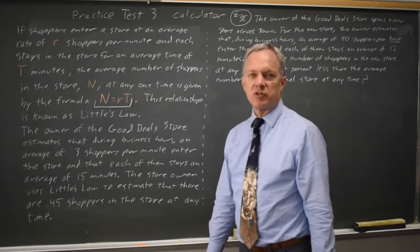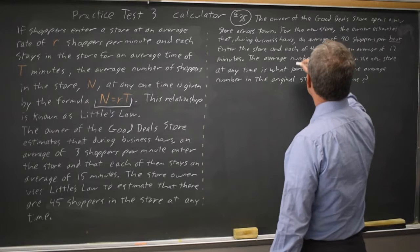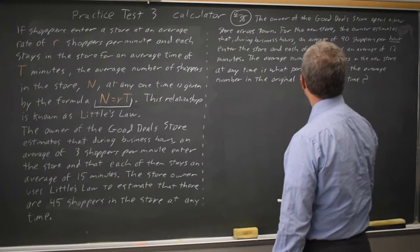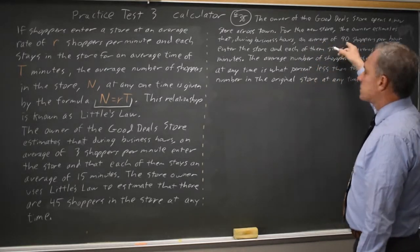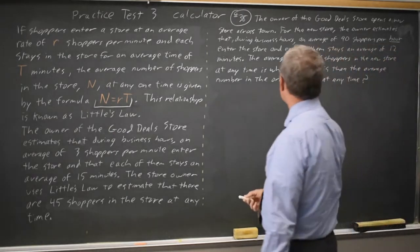We're told that the original store has 45 shoppers at any time on average. The owner opens a new store and they estimate 90 shoppers per hour each staying for 12 minutes. Notice that hour is underlined, which indicates we probably have to do something about that.